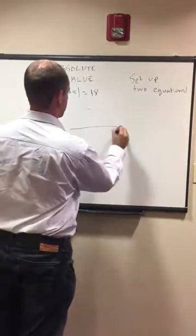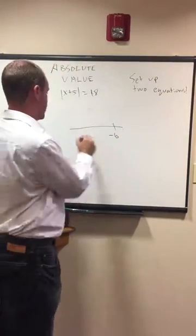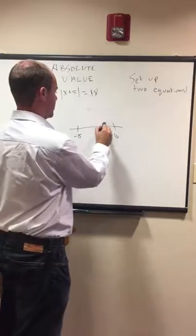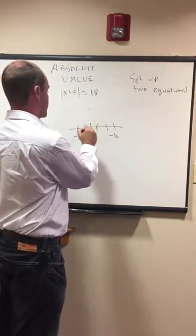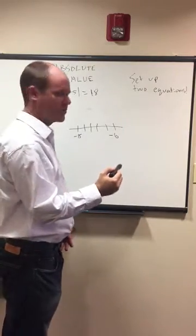Looking at a basic number line, let's remember that if we start off with negative 10 and we were to subtract 5, we would go negative 11, negative 12, negative 13, negative 14, and end up at negative 15. This is going to show up a lot in absolute value problems.